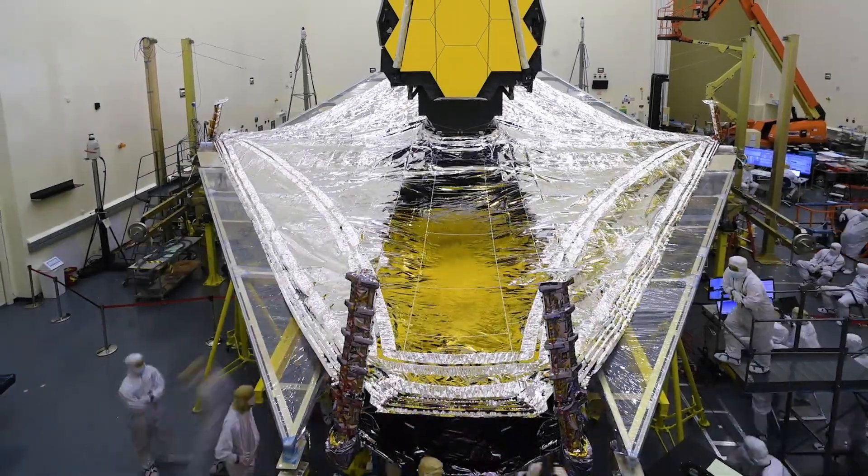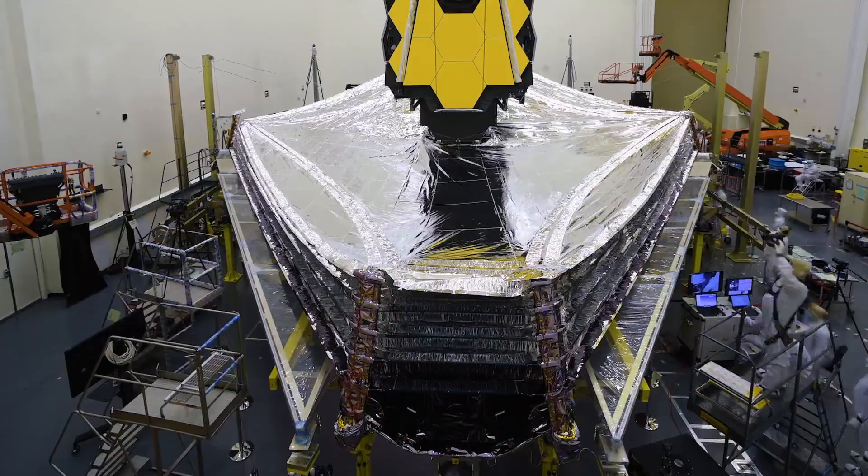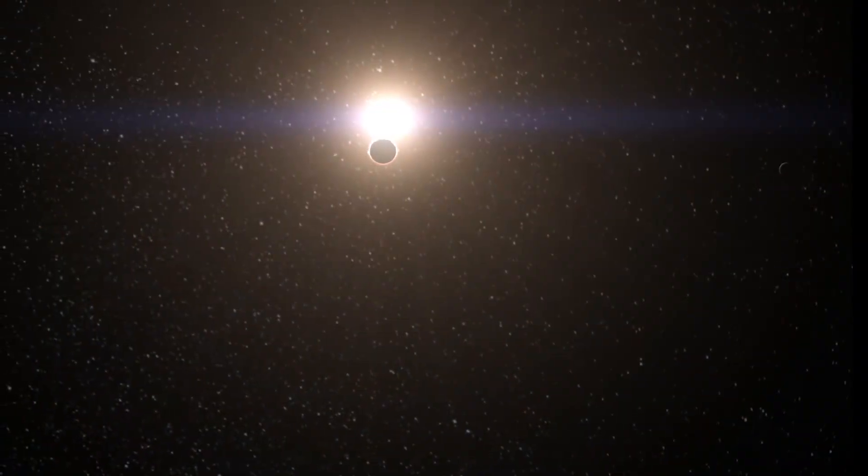Getting this cold is done with the help of the largest sunshield ever flown. A five-layer, tennis court-sized sunshield that blocks heat from the sun, earth, and moon.